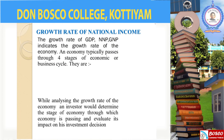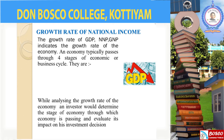The first economic variable is growth rate of national income. The growth rate of GDP, NNP, and GNP indicates the growth rate of the economy. GDP is considered as the main factor which indicates the growth rate of the economy. Higher the GDP, higher will be the growth rate, and lower the GDP, lower will be the growth rate. Unfortunately, our country is now having a lower rate of GDP. While analyzing the growth rate of the economy, an investor would determine the stage of economy through which the economy is passing. An economy typically passes through four stages of the economic or business cycle.